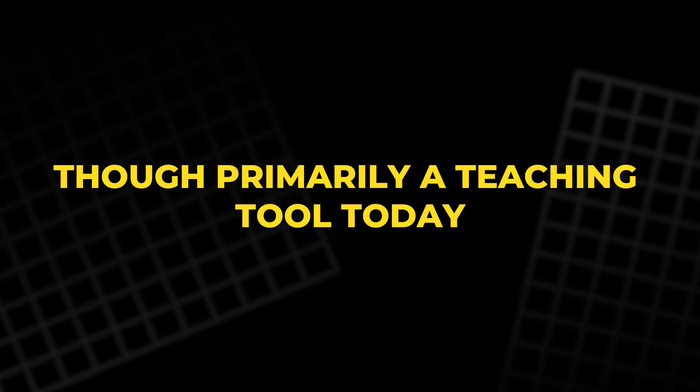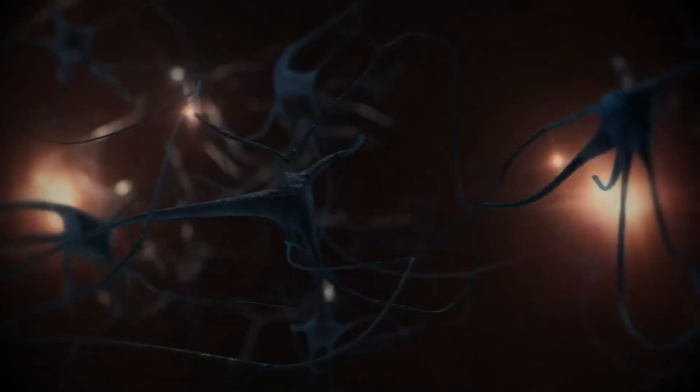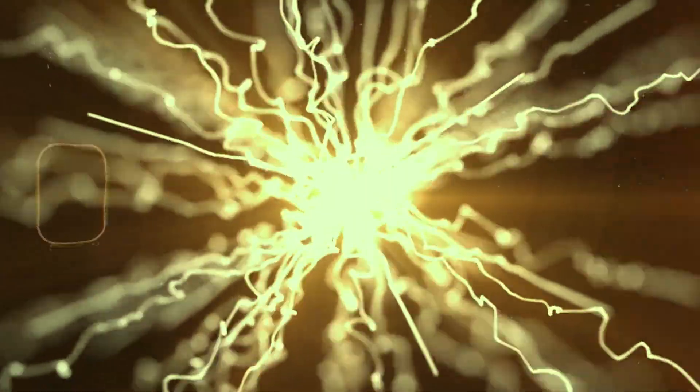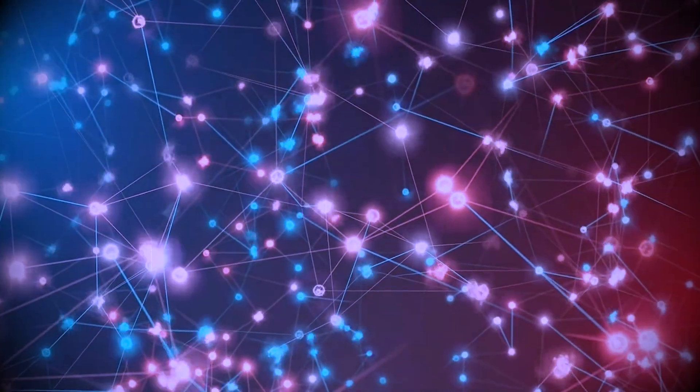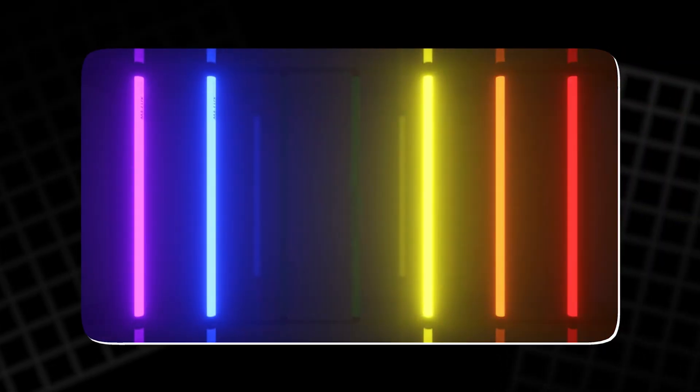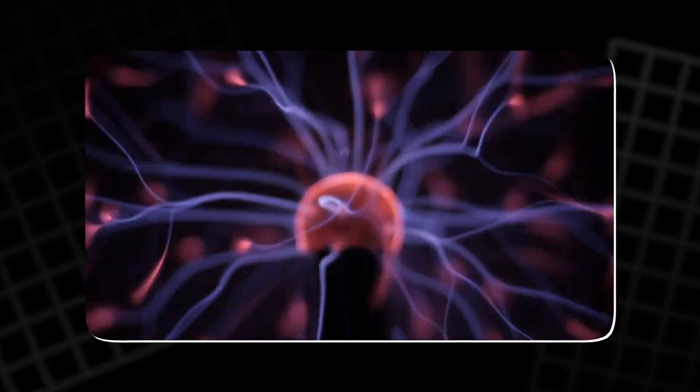Though primarily a teaching tool today, the coil still represents human curiosity about how invisible forces shape the material world. This blend of light, energy, and matter encapsulates the essence of modern science. It shows that everything from the color of a star to the glow of a gas tube is determined by the movement of electrons and the exchange of energy.